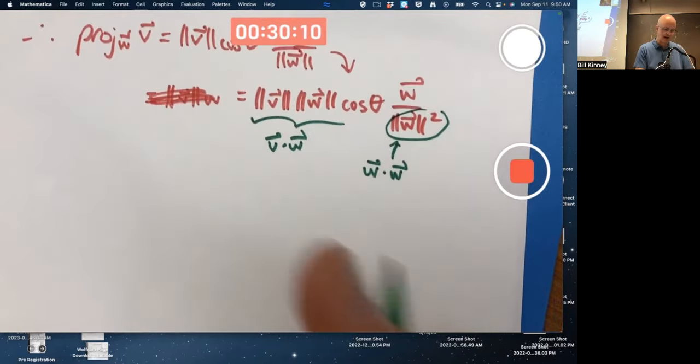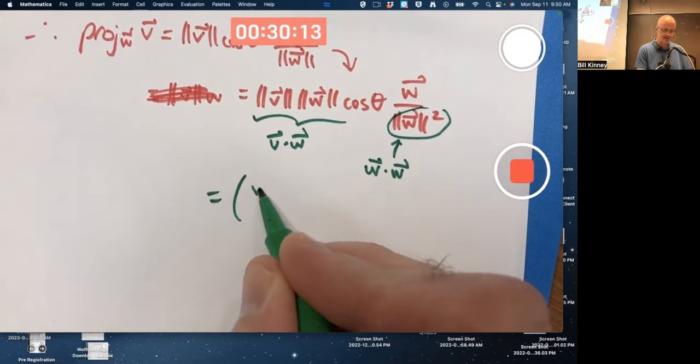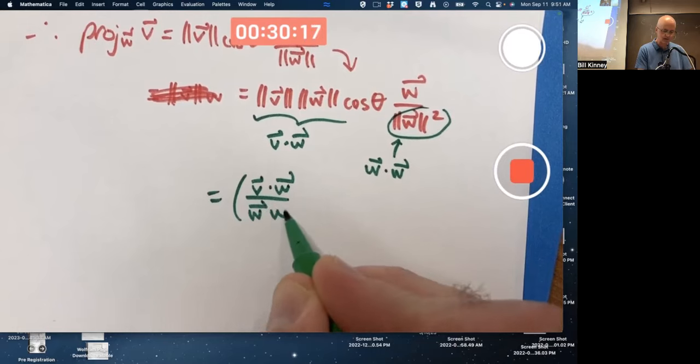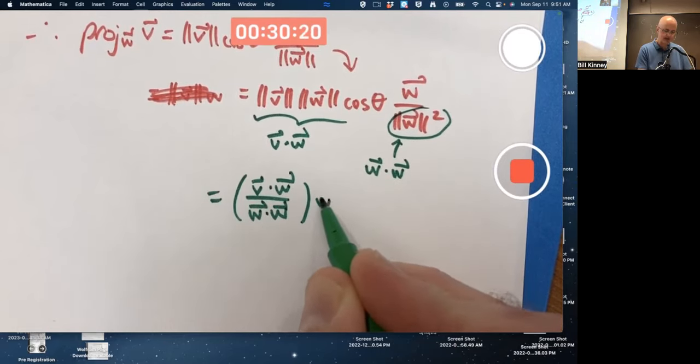And that's why this formula can ultimately be simplified as V dot W over W dot W, don't forget your dots, times the vector W.